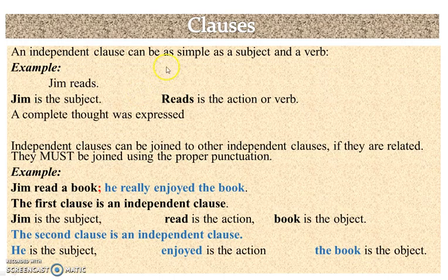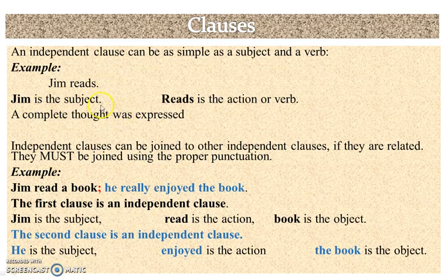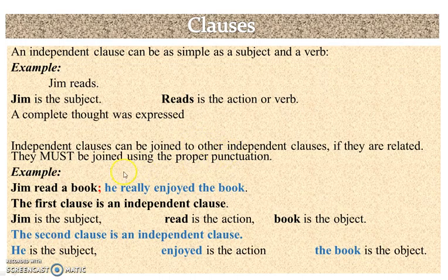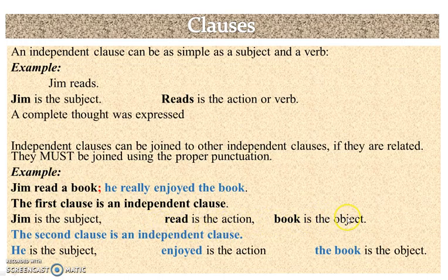Independent clauses can be as simple as a subject and a verb. For example, 'Jim reads.' Jim is the subject, reads is the action, and 'Jim reads' is a complete thought. Now, independent clauses can be together because they are related. For example: 'Jim read a book.' Jim is the subject, read is the action, and book is the object.